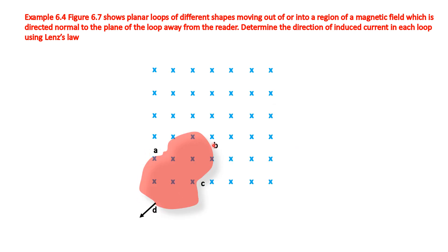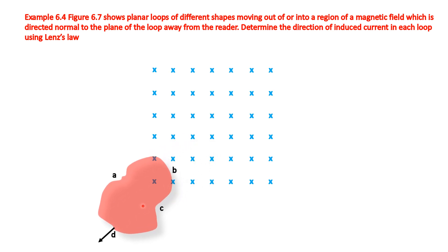Next, we consider the ABCD irregular shape. Its arrow mark shows the ABCD plane is moving out of the given magnetic field. The magnetic field lines are decreasing, and therefore the magnetic flux is also decreased. According to Lenz's law, the induced magnetic field should increase, so the induced magnetic field direction should be the same as the direction of the given magnetic field.